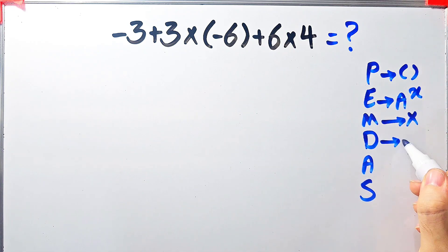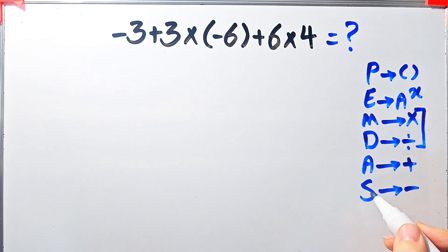D stands for division, A stands for addition, and S stands for subtraction. Multiplication and division have the same level of priority. Also addition and subtraction have the same level of priority. When we have both in an expression we start from the left and simplify the question.